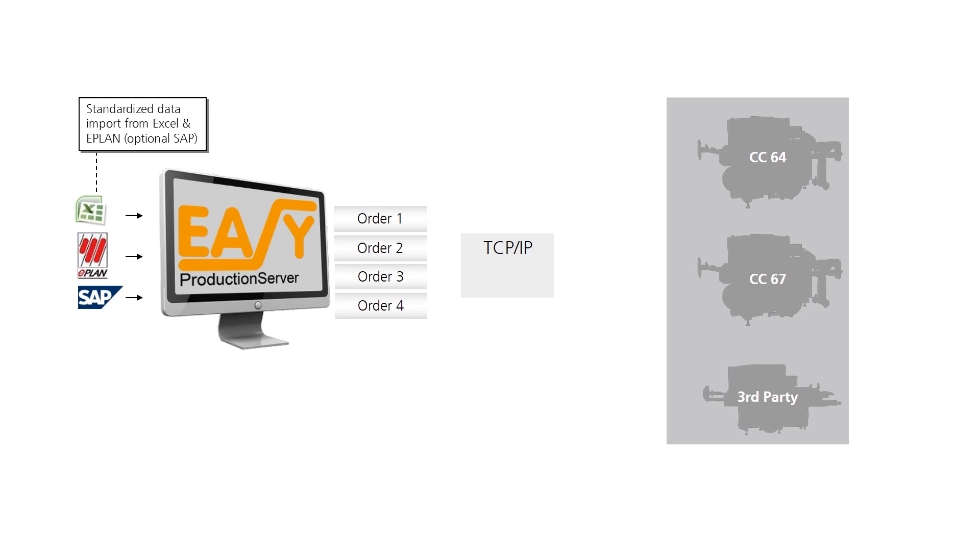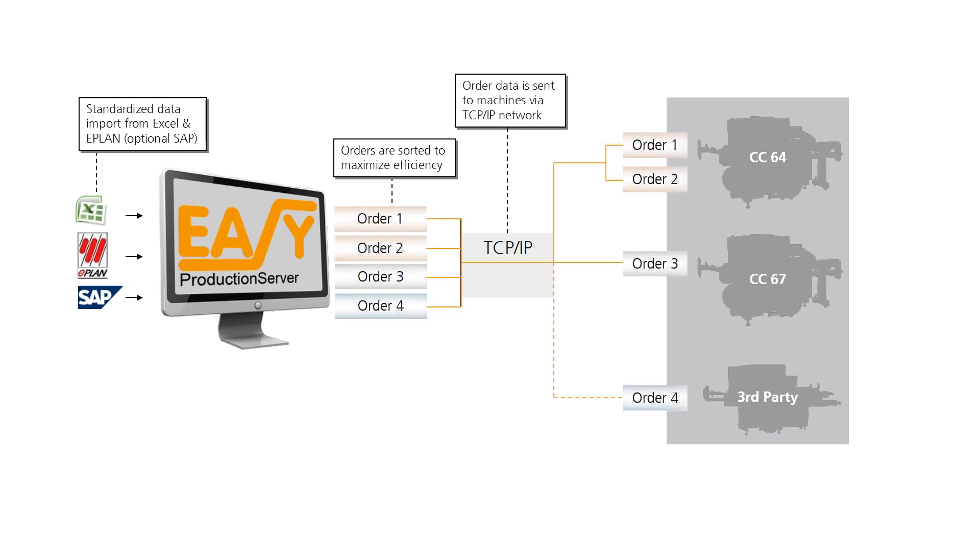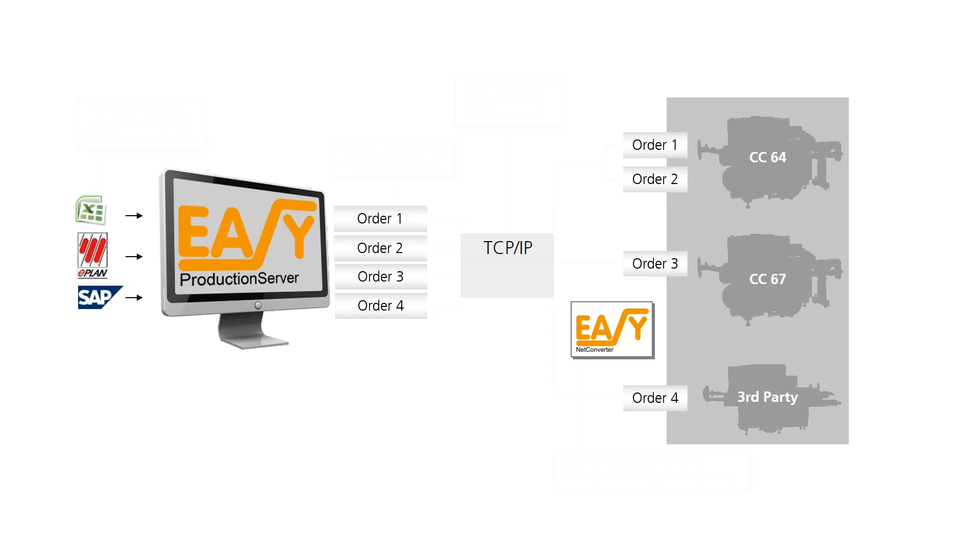To further optimize production, the CrimpCenter 6 series can be easily integrated into any network using standard TCP IP. The optional Easy Production Server software can be used to network all of your CrimpCenter machines and allows for the central management of production orders and distribution of the orders to individual CrimpCenter machines.